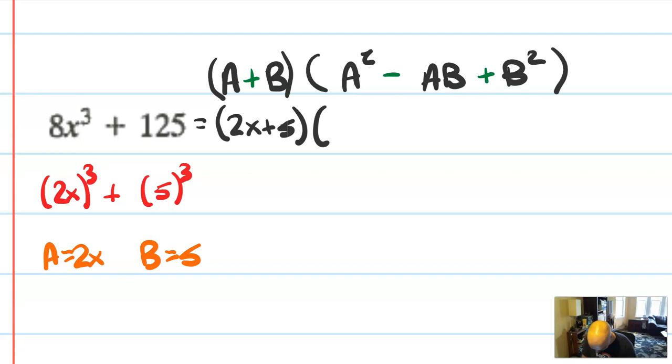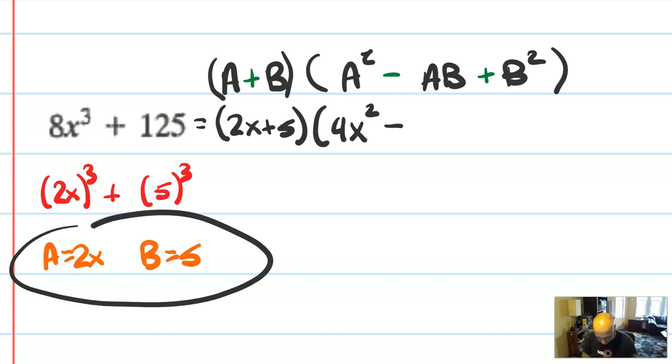a² should be 4x², ab, and this is where it can get a little tricky, but if you've written out your a and your b, it's not really that bad. So 2x times 5 should be 10x, and b² should be 25. So it turns out that this factors perfectly down into 2x plus 5, and then a quadratic 4x² minus 10x plus 25.